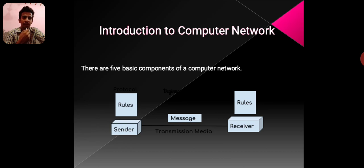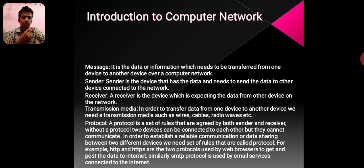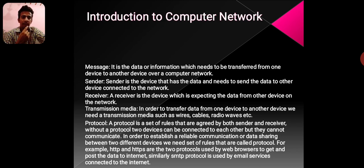There are five basic components of a computer network: Sender, Message, Receiver, Transmission Media, and Protocol. Message is the data or information which needs to be transferred from one device to another device over a computer network.